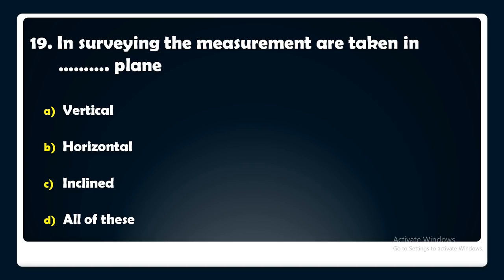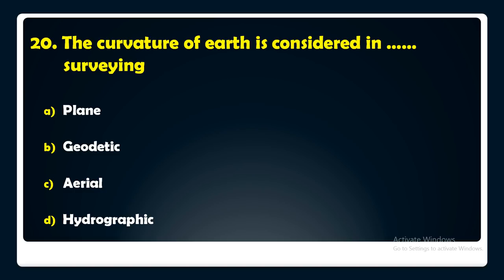The curvature of the earth is considered in which type of surveying — plane surveying, geodetic surveying, aerial surveying, or hydrographic surveying? The answer is: the curvature of the earth is taken into consideration in geodetic surveying.